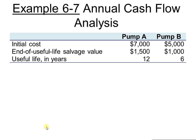Let's take a look at example 6-7. Our last example was 6-6, where all three alternatives — Plan A, B, and C — had equal lives of 10 years. In this case, we want to select between Pump A and Pump B. Pump A has a useful life of 12 years, while Pump B has a useful life of 6 years, so they are not equal. We also have initial costs and end-of-life salvage values for both pumps.